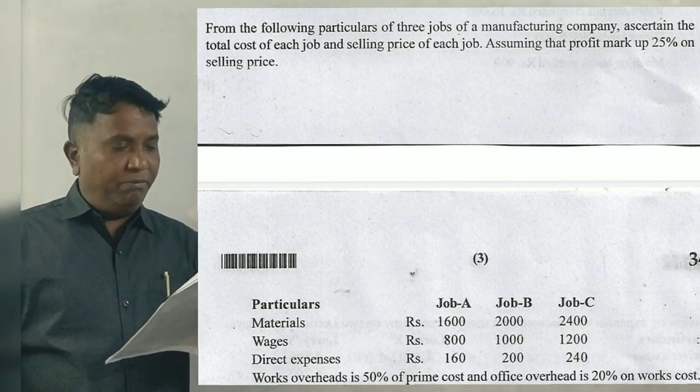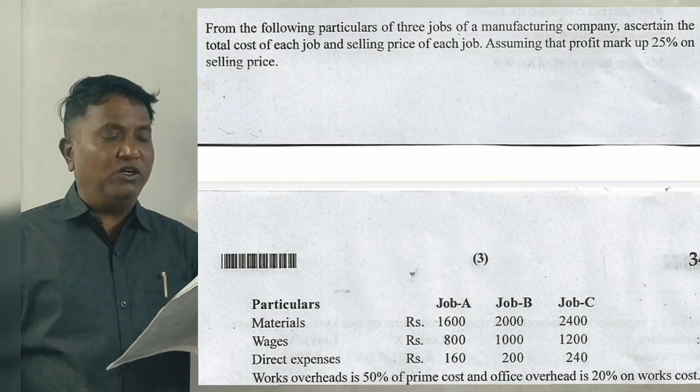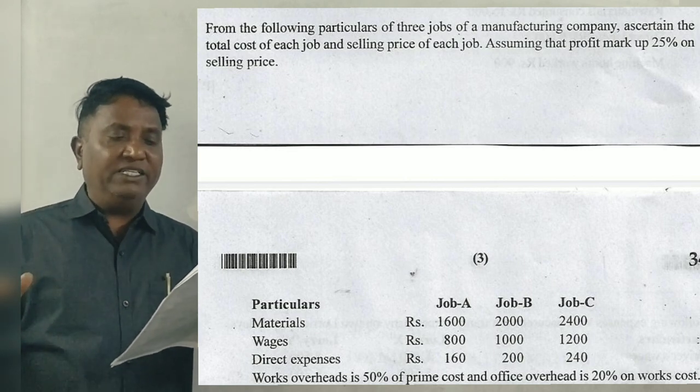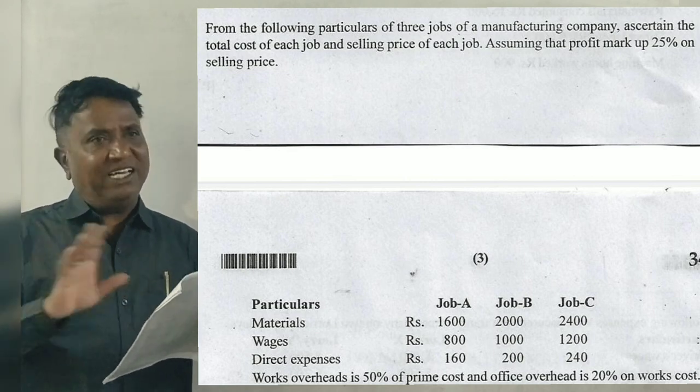Particulars: Job A, B, C. Materials, wages, direct expenses. Works overhead 50% of prime cost, office overhead is 20% on works cost.